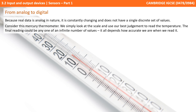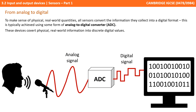Consider this mercury thermometer. We simply look at the scale and use our best judgement to read off a temperature. In the analogue world, there exists an infinite number of values for this reading — it simply depends on how accurately the thermometer is able to be read. In order to make sense of real-world quantities, all sensors need to convert the information they're collecting into a digital format. This is typically achieved by some form of analogue to digital converter, or ADC, and these devices convert real-world values into discrete digital values.